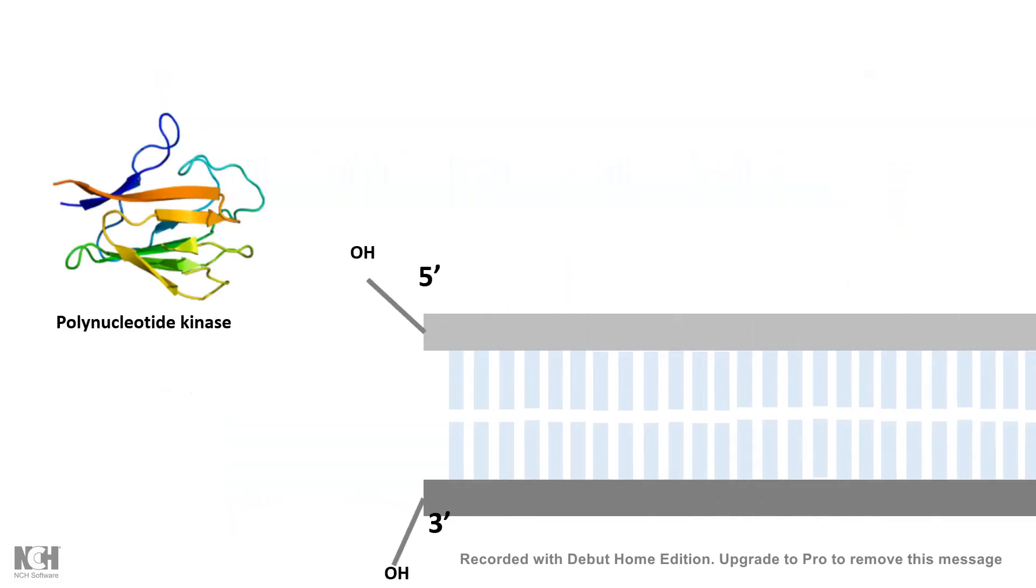Most of the time, the radiolabel incorporated in the 5' end is gamma-32P ATP or something similar. Sometimes sulfur is also used as a radiolabel.